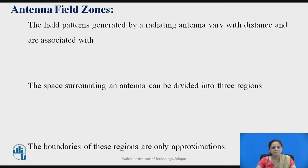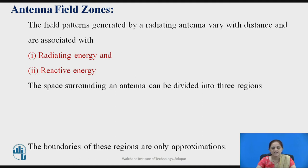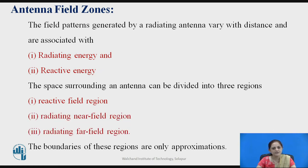The field patterns generated by a radiating antenna vary with the distance and are associated with radiating energy and reactive energy. The electromagnetic energy radiating into free space is the radiating energy, while reactive energy is related to the complex quantity of power. The space surrounding an antenna can be divided into three different regions: the reactive field region, the radiating near field region, and the radiating far field region.